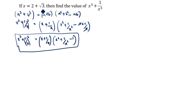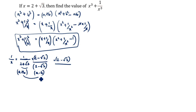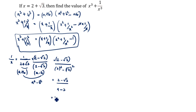We know x is 2 plus root 3. What is 1 by x? 1 by x is equal to 1 by 2 plus root 3. We will rationalize the denominator — here is plus, so we multiply by 2 minus root 3 divided by 2 minus root 3. This gives 2 minus root 3 over a plus b times a minus b, which equals a square minus b square. So 2 square minus root 3 square equals 4 minus 3 equals 1. Therefore 1 by x equals 2 minus root 3.